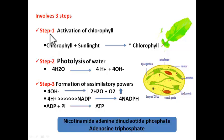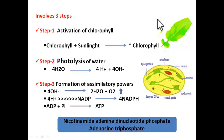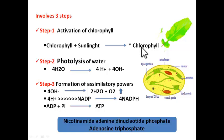The three steps are: step one, activation of chlorophyll; step two, photolysis of water; step three, formation of assimilatory powers. In step one, when light falls on leaves, the chlorophyll molecules get excited. As you studied in chemistry, when a molecule gets excited it comes back to ground state in a fraction of seconds. The same happens with chlorophyll — molecules absorb sunlight, get excited, and then return to ground state, releasing energy in the process.